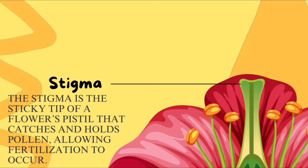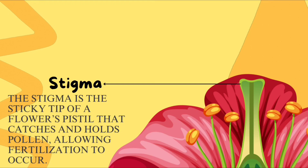This part of a flower is called stigma. The stigma is the sticky tip of a flower's pistil that catches and holds pollen, allowing fertilization to occur.